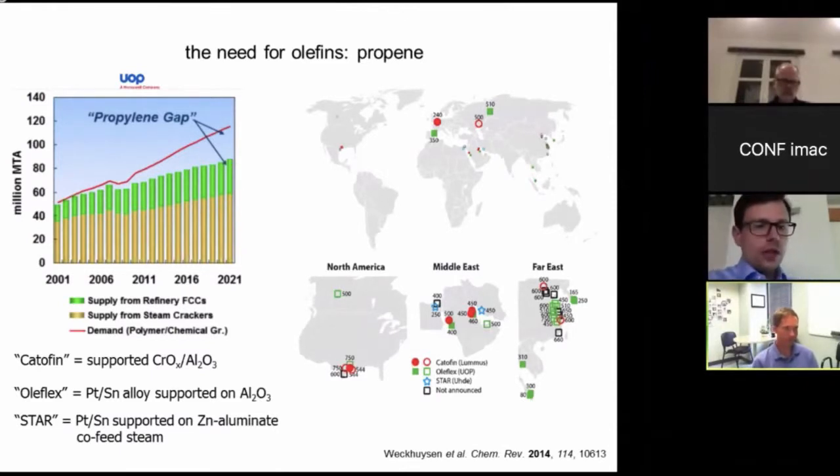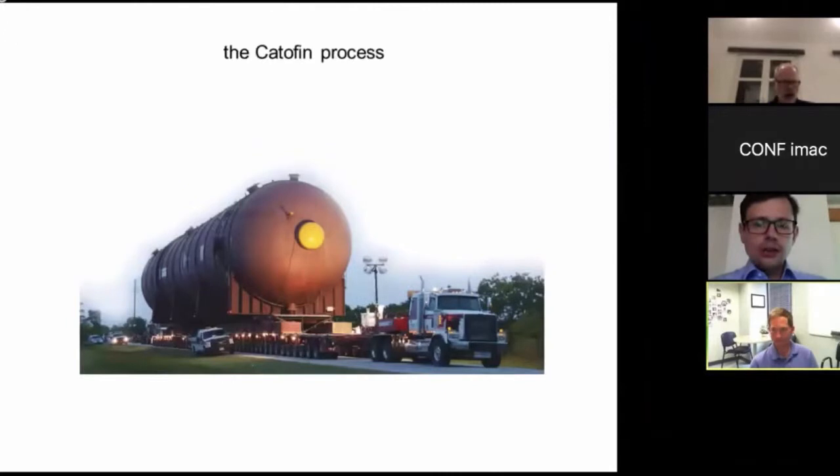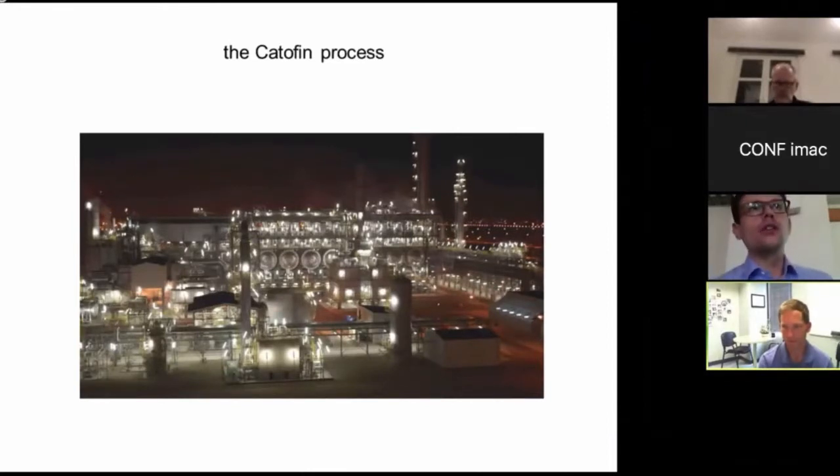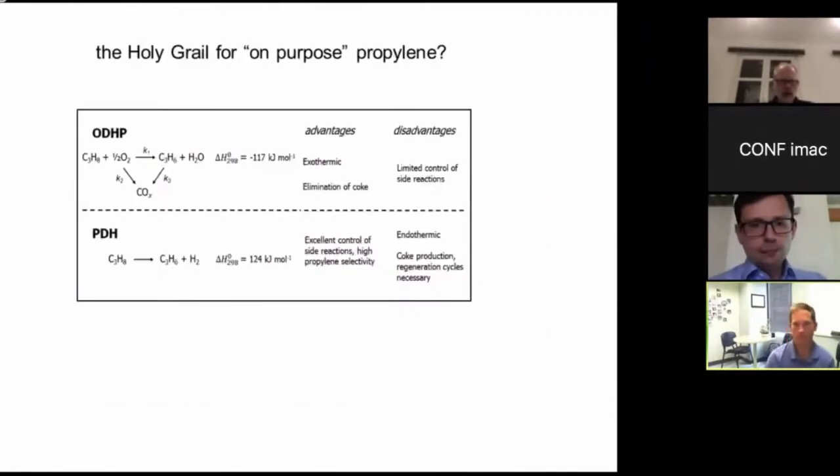All of these technologies suffer from similar difficulties. The most popular one is oleflex based on platinum. Catofin technology is based on a chromium catalyst. Just that you appreciate the scale, this is one reactor that goes in a typical catofin process. Typically a plant producing propylene in a catofin process has 10 of those reactors, because you need some reactors that are doing the job, some reactors they are regenerating the catalyst because the catalyst deactivates really rapidly.